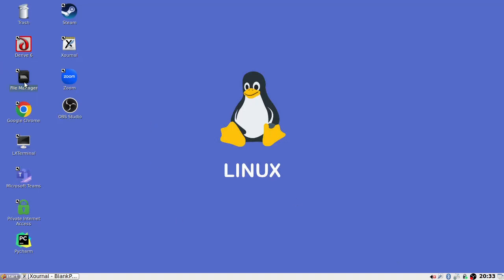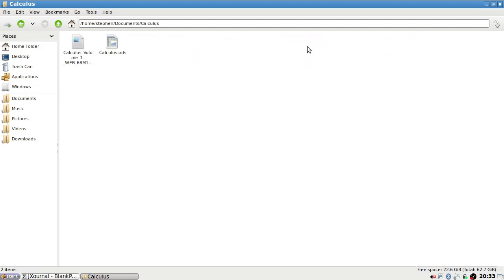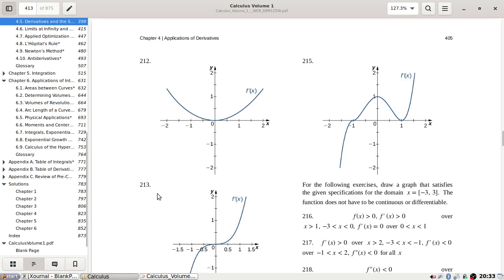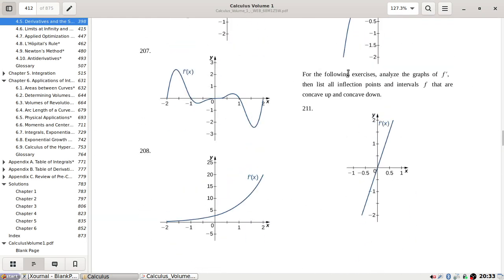Right, let's see where we left off. Okay, 211. Right, what are we doing here? All the inflection points and intervals are concave up or concave down?